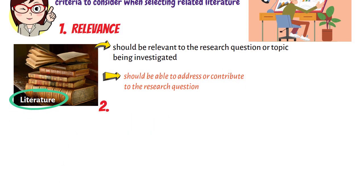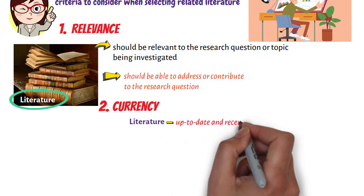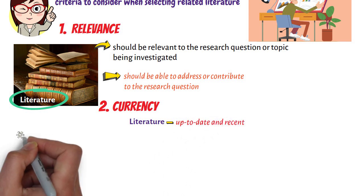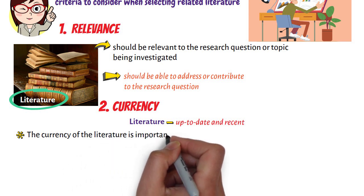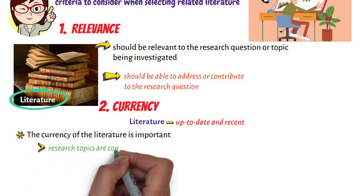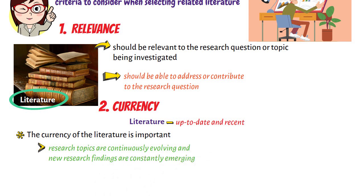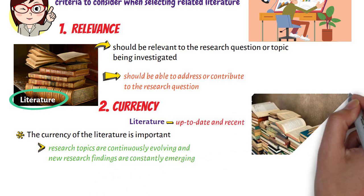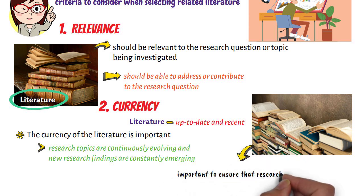Second, in terms of currency: literature should be up-to-date and recent. The currency of the literature is important because research topics are continuously evolving and new research findings are constantly emerging. Recent literature is important to ensure that research is based on current and relevant information.